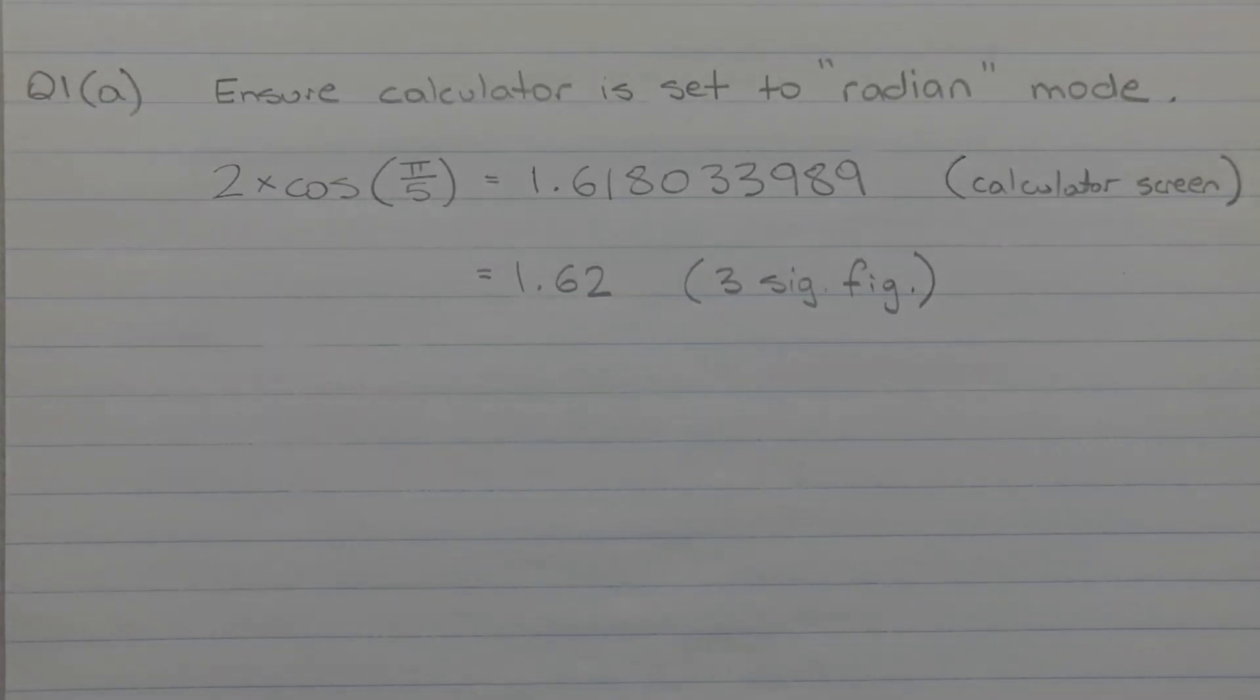The final step is to round that answer correct to 3 significant figures. Now it's generally good practice to write the entire decimal first, and then round from the answer that you've written on the paper.